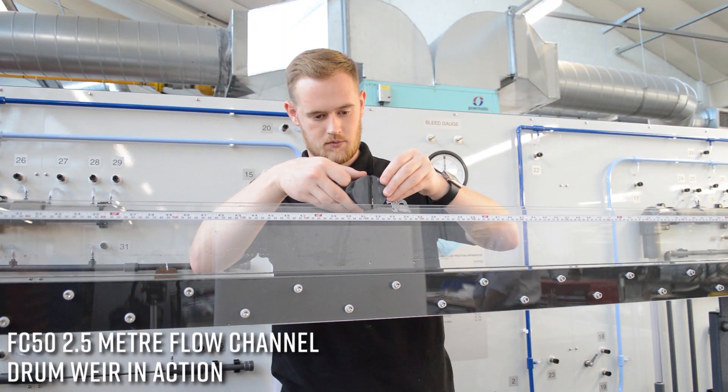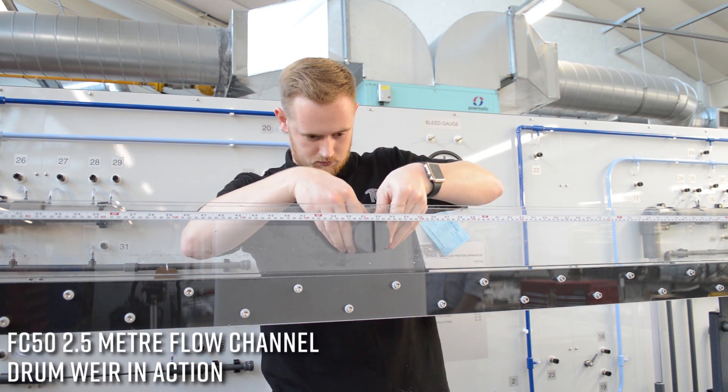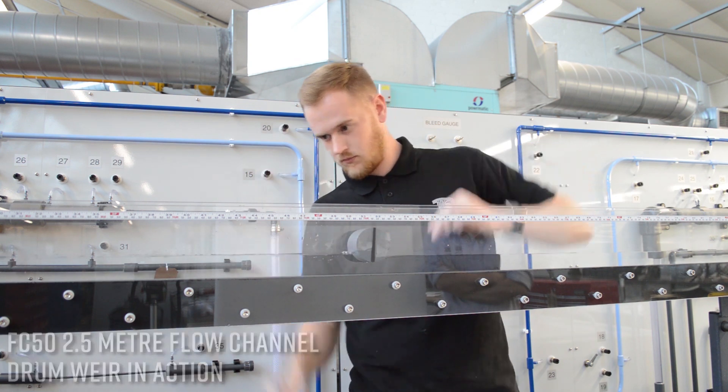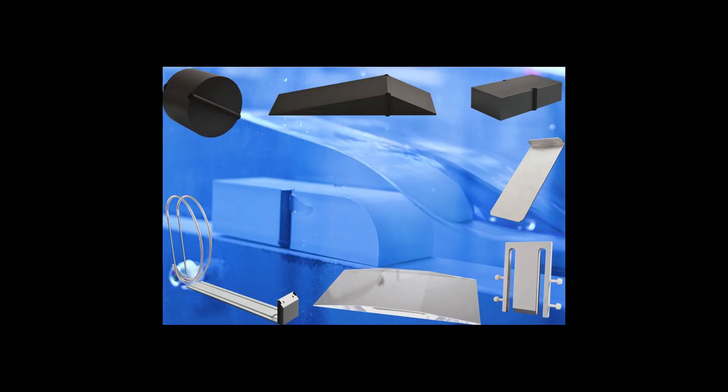Another of the weirs is a drum weir which is being positioned part way down so that the water flows underneath and over the top. A venturi flume and sluice gates are included.